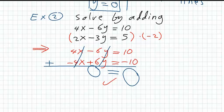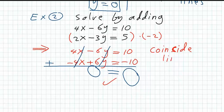Zero equal to zero is a true statement. In this condition, we will say that these two lines are coincide lines. And in this condition, we will say that we have many solutions.